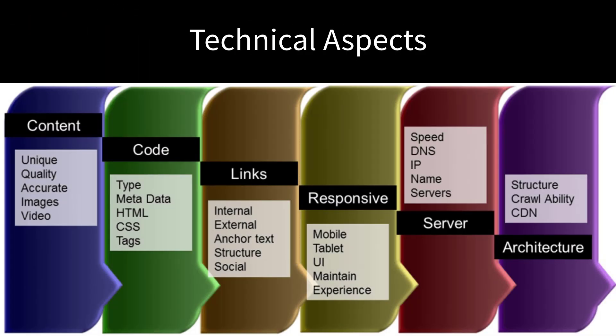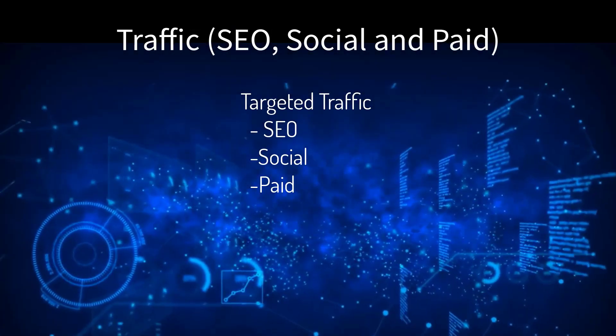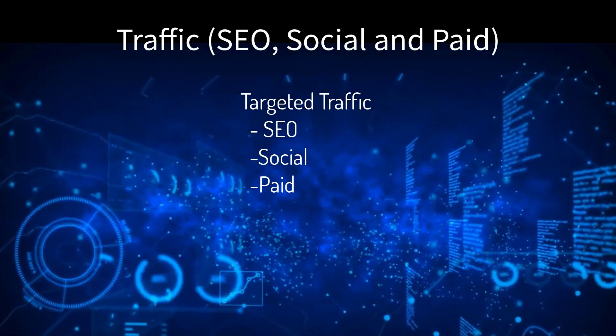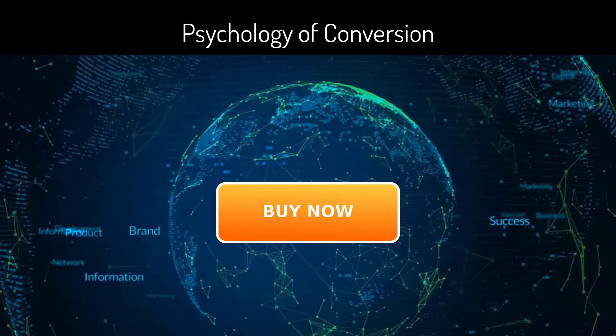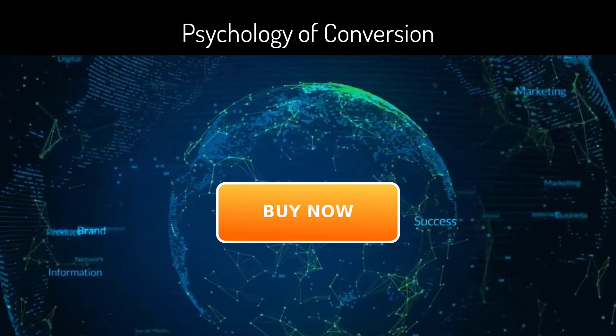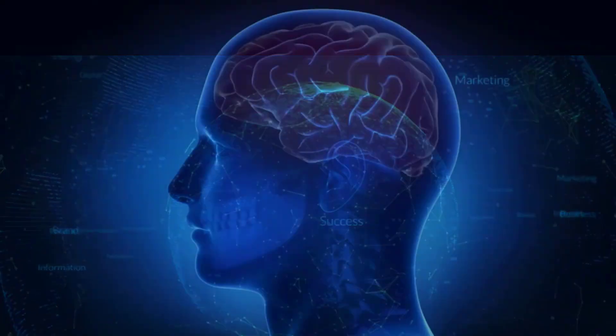Of course, all online marketing must have three elements in alignment: the technical aspects — servers, layout, code structure; the traffic — SEO, social, and paid; and the psychology of conversions.